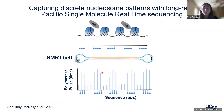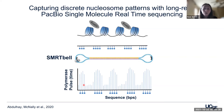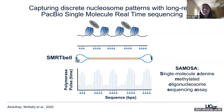The PacBio sequencer can inherently detect the M6A modification. As the sequencing polymerase encounters an epigenetic modification, it temporarily stalls, and the time to incorporate the base is longer compared to its unmodified version. This can be measured as interpulse duration for a specific modification like M6A. We've since published a proof of concept on the assay, which we've called SOMOSA — single molecule adenine methylated oligonucleosome sequencing assay.